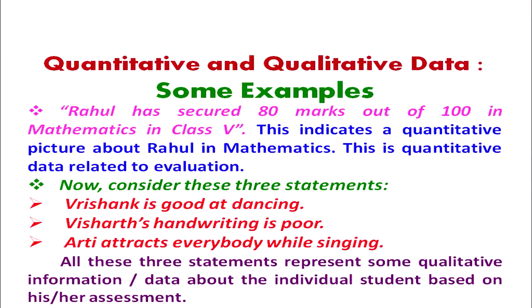You assessed Vrishankh while he was participating in a dance activity and made the statement that he is good at dancing. Similarly, you observed during the teaching-learning process that a student's handwriting is poor, and you observed that Aarti attracts everybody while she sings. In all of these statements, no characteristic of the child is described in terms of numbers, scores, or marks — rather, qualitative information is there. So these are qualitative data, whereas Rahul's 80 marks are quantitative data.